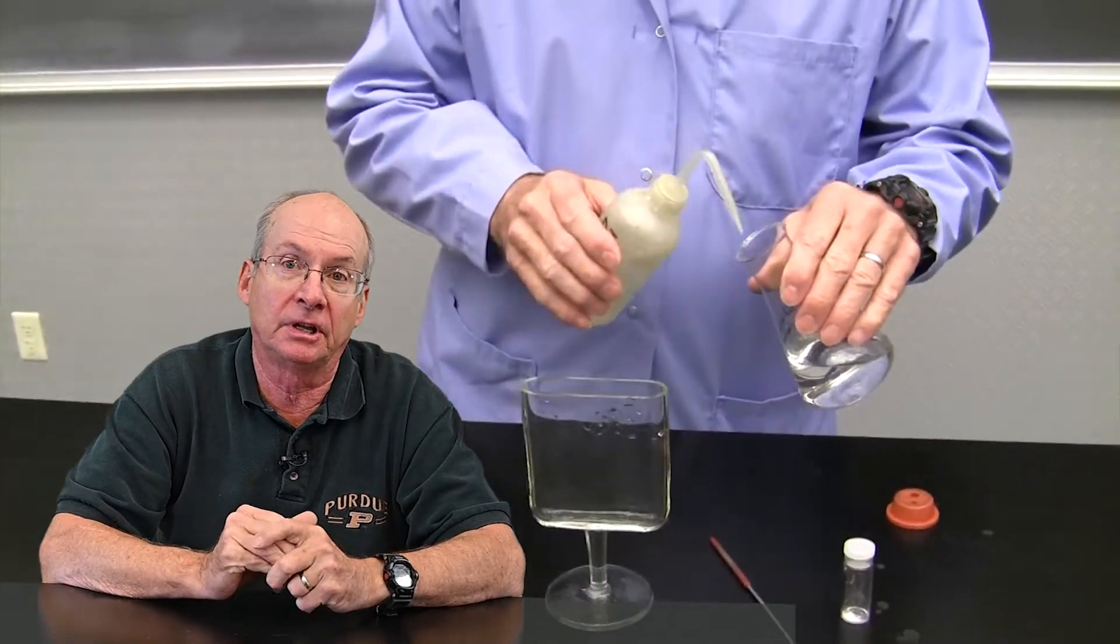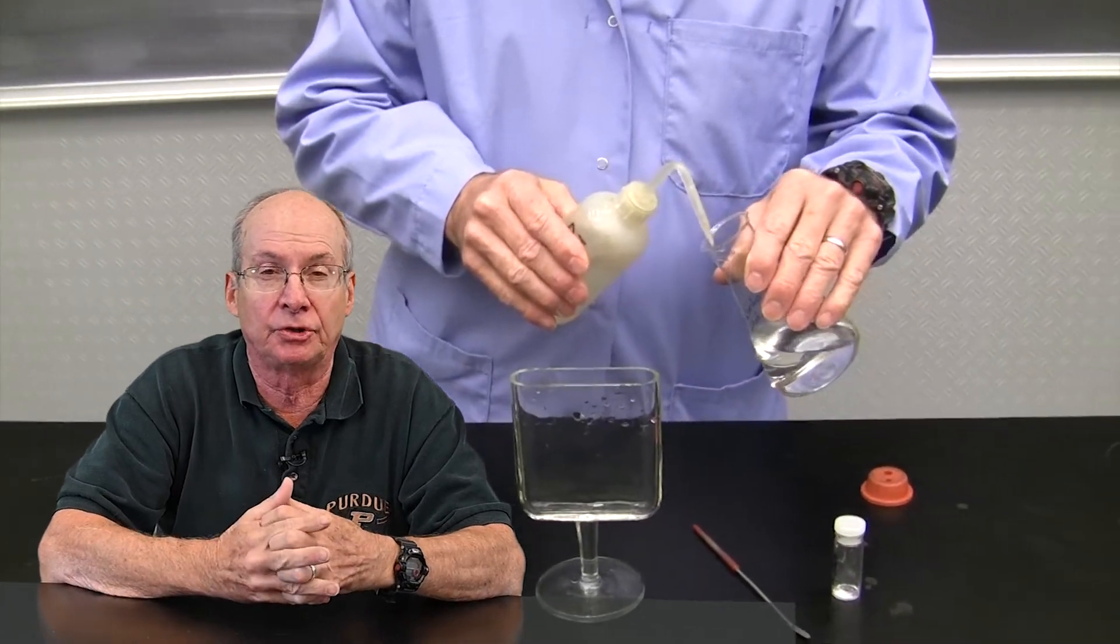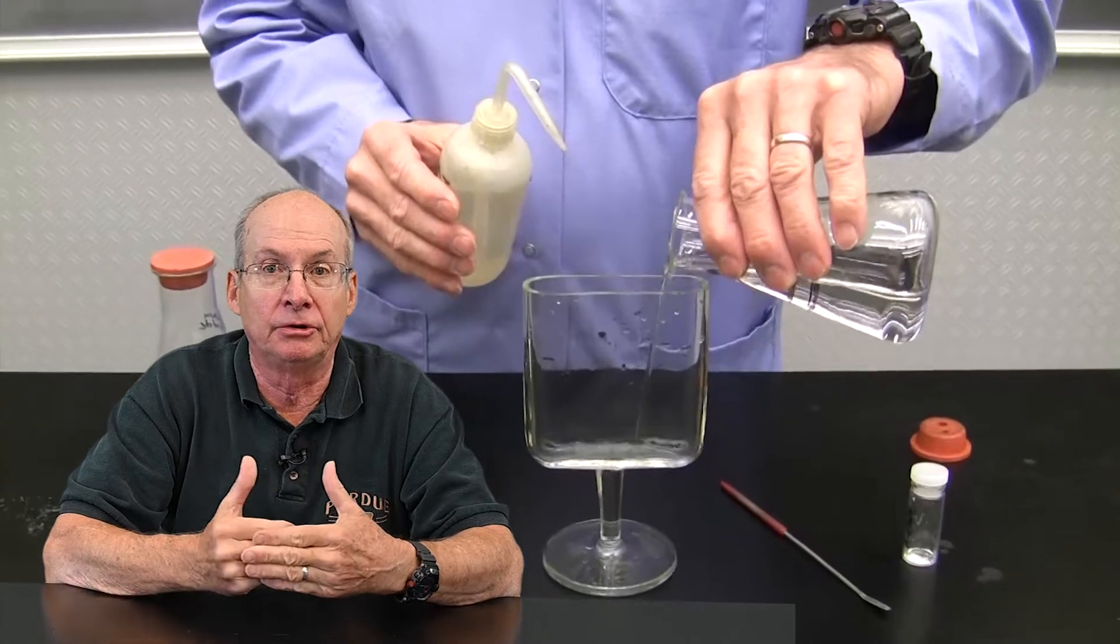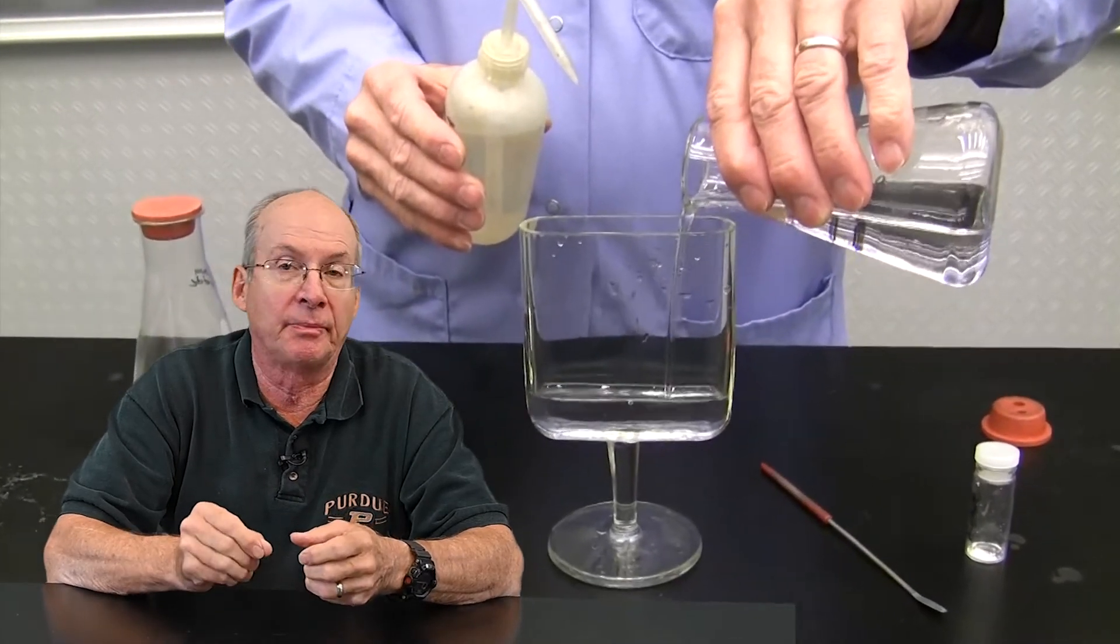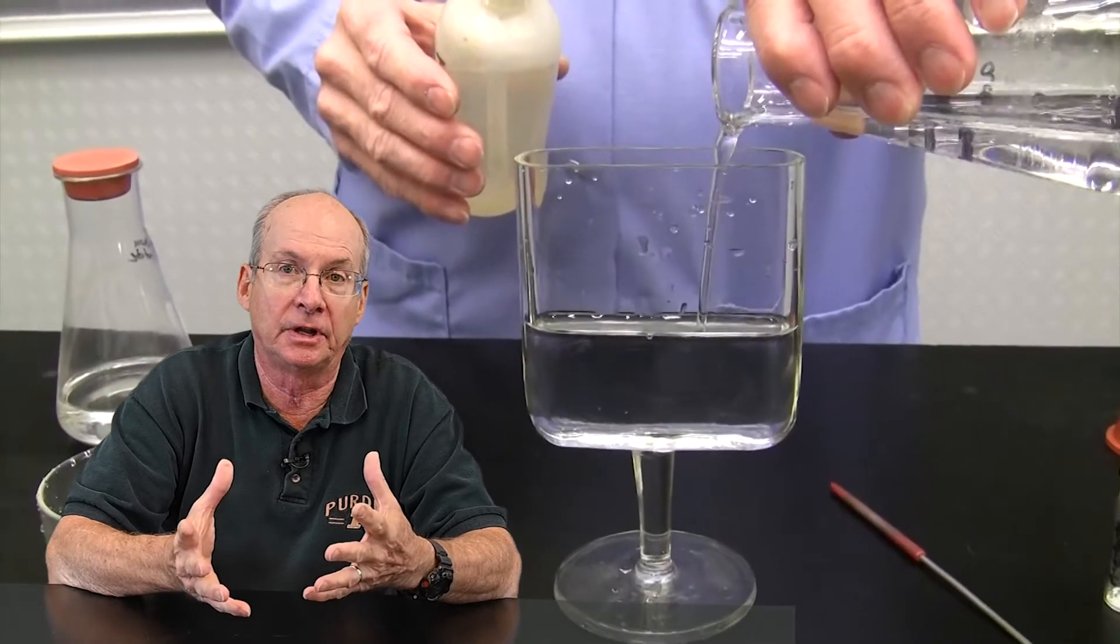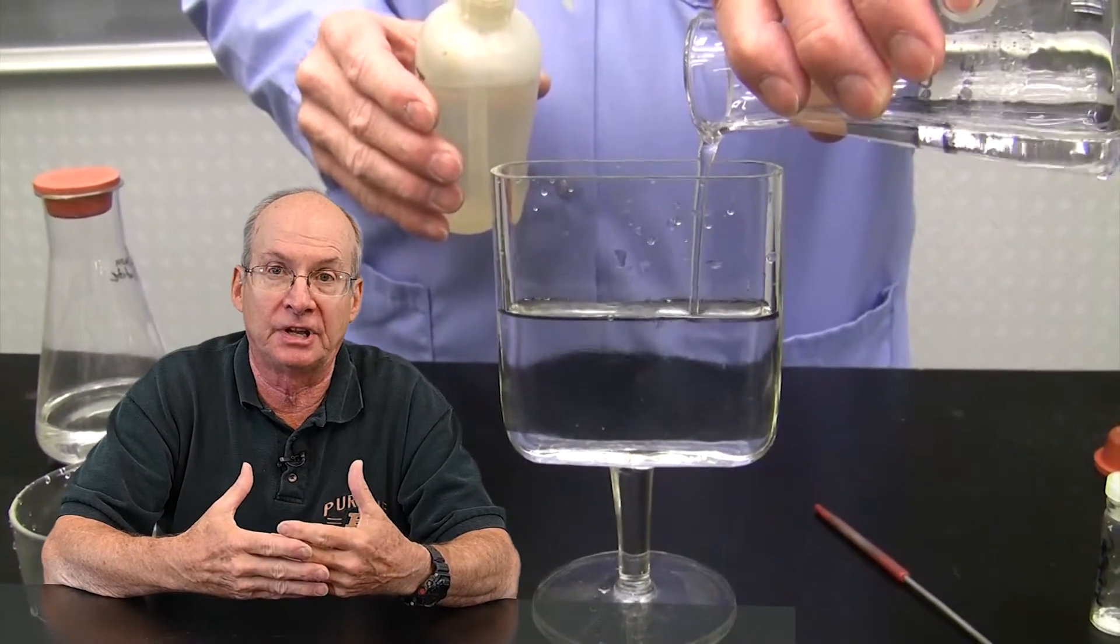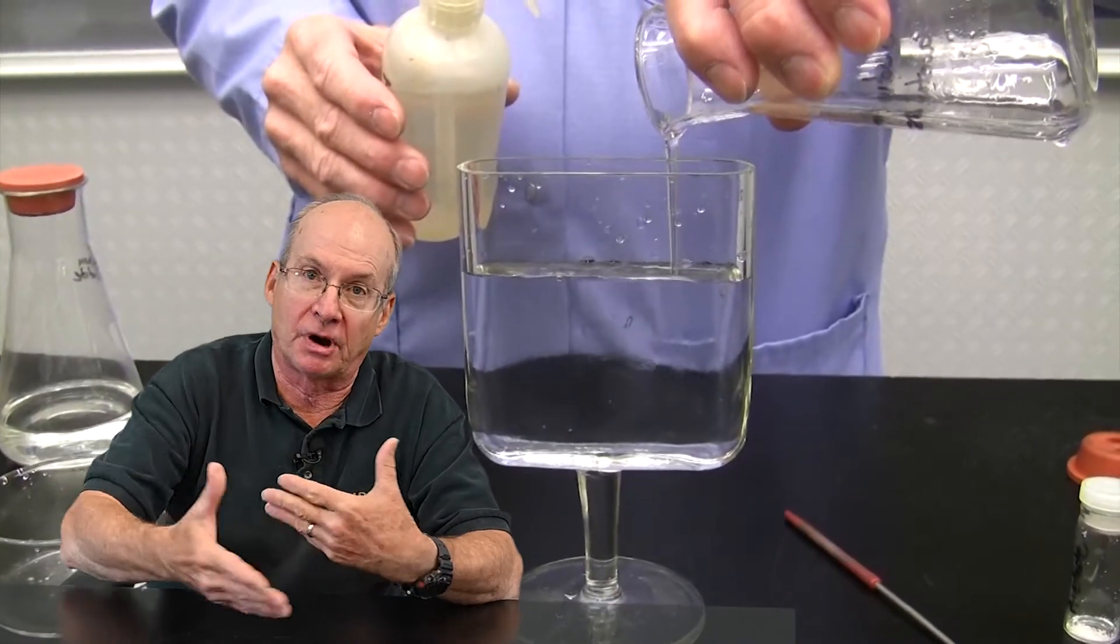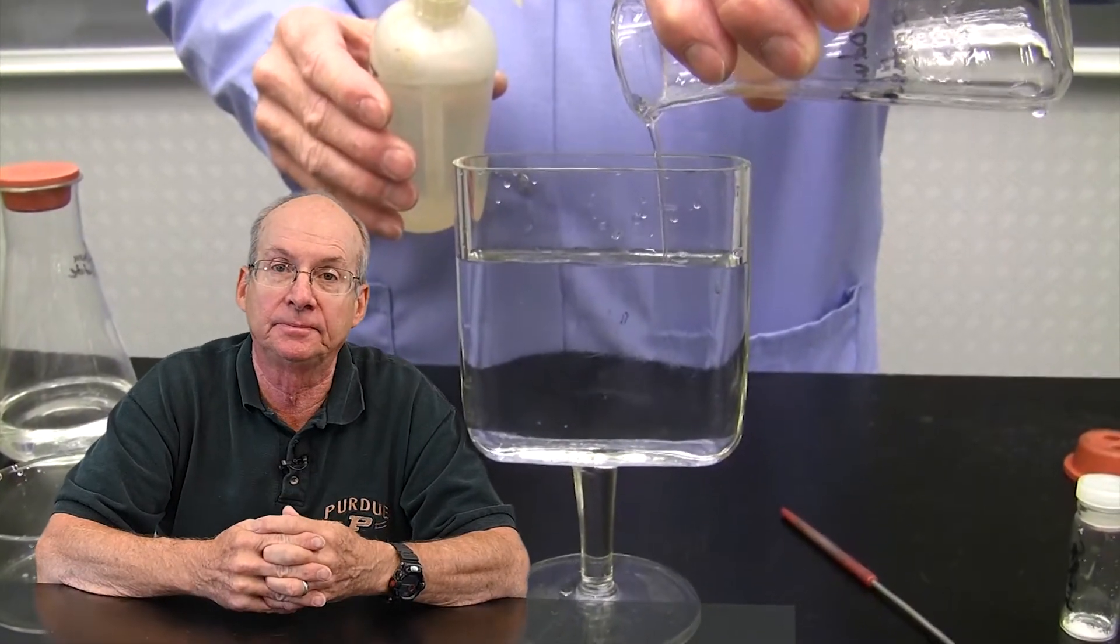This is basic chemistry that's used in a lot of the heat packs today where you can reuse them. All you do is flex a metal disc in there that seeds the crystals to start, and it solidifies and produces heat for a period of time. Then you put it back into boiling water and that drives it back into the liquid state again, and you're ready to go.